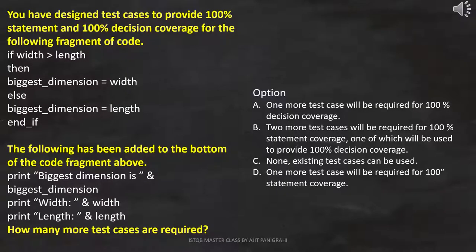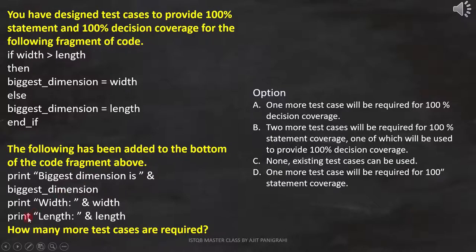The next question: you have designed test cases to provide 100% statement and 100% decision coverage for a fragment of code. New code has been added to the bottom of that fragment. We have to find how many more test cases are required. Initially we had the original code with test cases covering statement and decision coverage. After that, new code was added, and now we need to determine if additional test cases are required to cover the new piece of code.